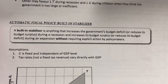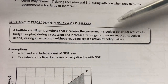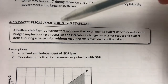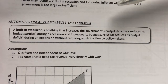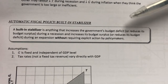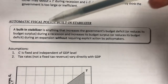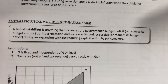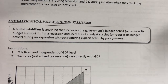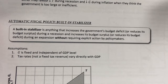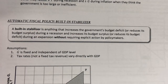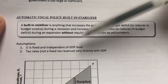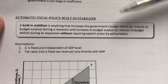A built-in stabilizer is anything that increases the government's budget deficit or reduces its budget surplus during a recession, and increases its budget surplus or reduces its budget deficit during an expansion, without requiring explicit action by policy makers. This is what it means by the system working automatically without requiring intervention by the government. As always, there are assumptions to be made to understand this concept better.